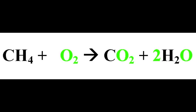The next atom is oxygen. On the left hand side we have two oxygens. On the right hand side we have two oxygens from the carbon dioxide plus a single oxygen from two lots of water molecules, adding up to a total of four oxygen atoms on the right. So that's two on the left and four on the right. By adding a balancing number of two in front of the oxygen molecule we now have four oxygen atoms on the left and four on the right. Now this chemical equation is balanced: one molecule of methane reacts with two molecules of oxygen to produce one molecule of carbon dioxide and two molecules of water.